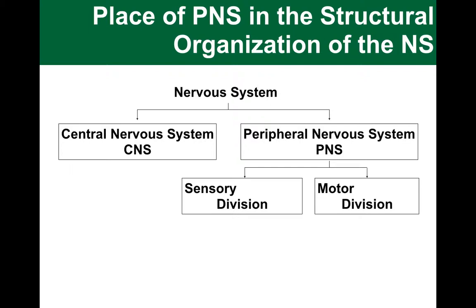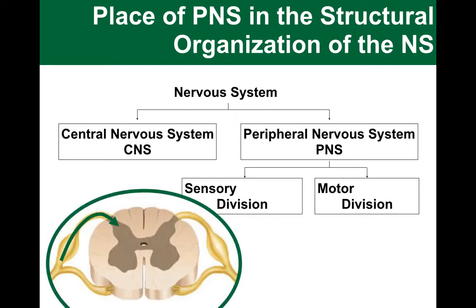And from our study of the spinal cord structure, in particular the spinal nerve roots, we remember that we had a dorsal root, which was afferent and carried sensory information into the central nervous system. And we had a ventral root, which was efferent and carried motor information out from the central nervous system into the peripheral nervous system.